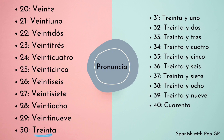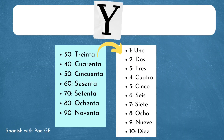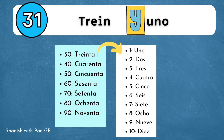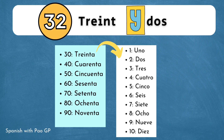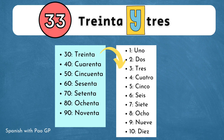Desde el número treinta hasta el noventa y nueve tienen la misma estructura, es decir, el número unido por medio de la y, como treinta y uno, treinta y dos, treinta y tres.